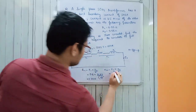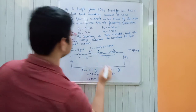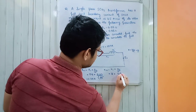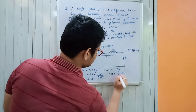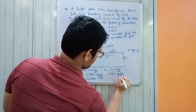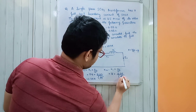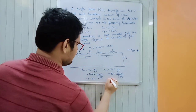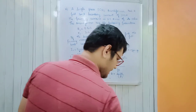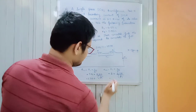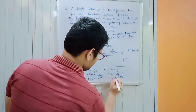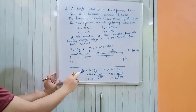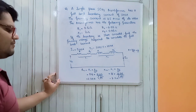For the reactance: X01 = X1 + X2/K² = 2 + 0.06/(1/5)² = 2 + 1.5, which gives X01 = 3.5 ohm.